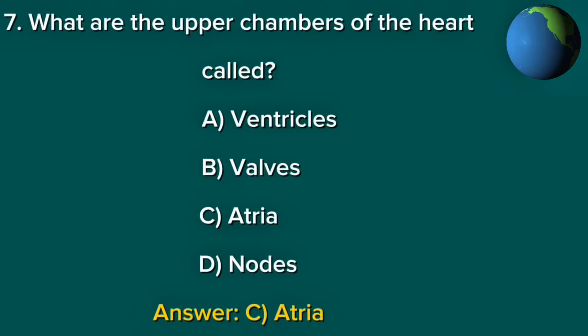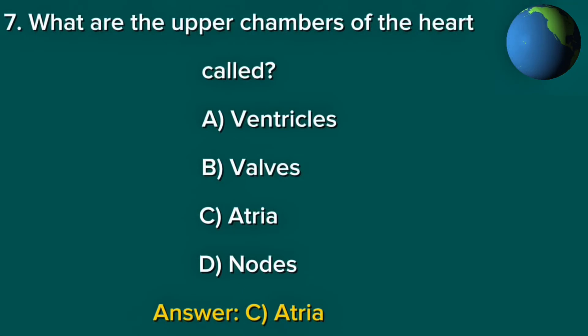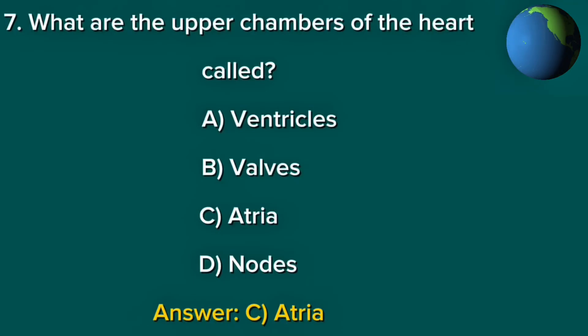Question 7. What are the upper chambers of the heart called? A. Ventricle. B. Valves. C. Atria. D. Nodes. Answer: C. Atria.